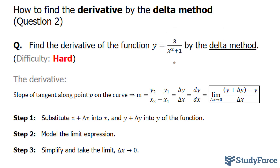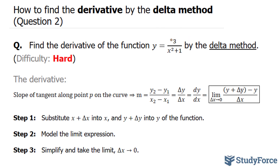To do a question like this, we need to follow the formula shown here, where dy over dx is equal to the limit as delta x approaches 0 for the following expression. Our first step is to substitute x plus delta x into the x of our function, and y plus delta y into the y part of the function.